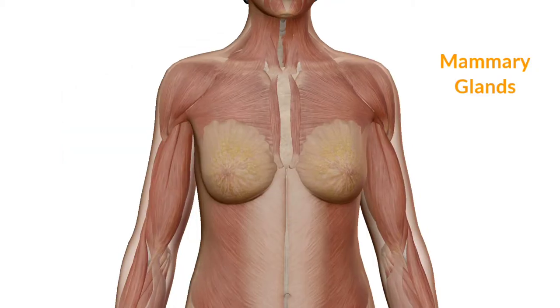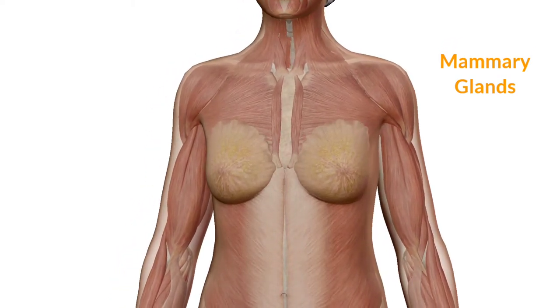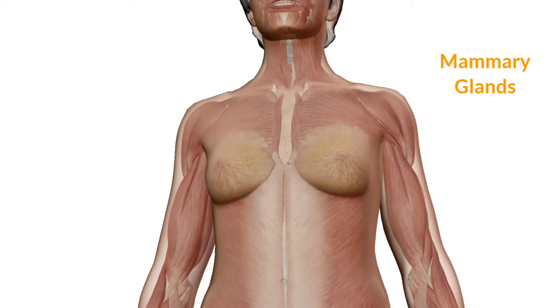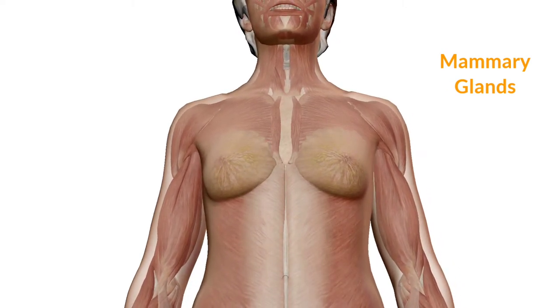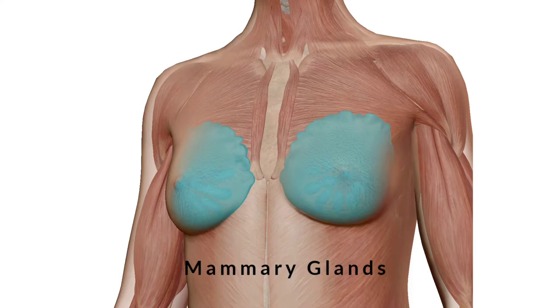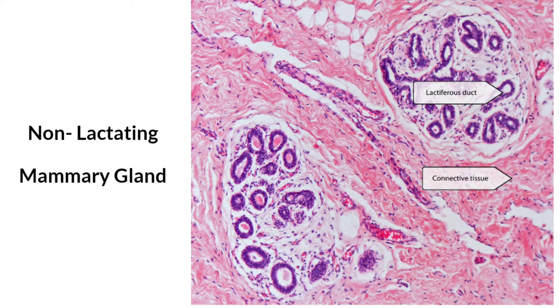Now comes to the mammary glands. The mammary glands are apocrine exocrine glands that produce and secrete milk when stimulated by certain hormones during lactation. Mammary glands are classified as apocrine exocrine glands. This picture is of a non-lactating mammary gland.